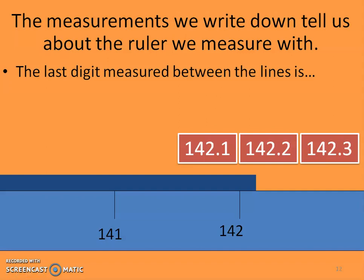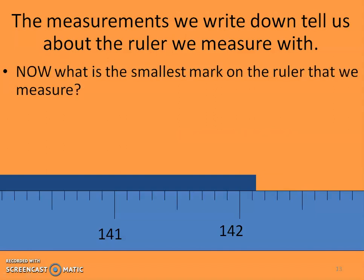So again, measurements we write down will tell us about the ruler that we're using. So again, estimate that last digit. And what do you come up with? That's what I came up with. So again, any one of those would probably work. If you did like 142.5, that's a little much, right? So you want to kind of break up the distances between that 141 and 142 in some way.